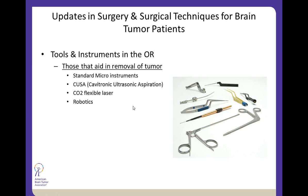No discussion would be complete without talking about the standard instruments — tools that are commonplace but have been refined with a lot of effort and experience. The bipolar tool allows coagulation of vessels; micro instruments such as micro scissors and the Rhoton set allow dissection of the subarachnoid space around critical vessels and nerves. These are commonly used, but we take for granted the refinement in these tools and the ability they give the surgeon to safely work in confined and critical areas.